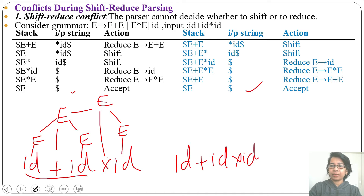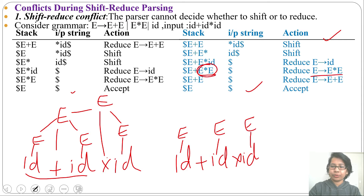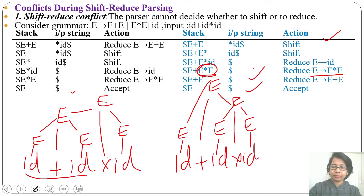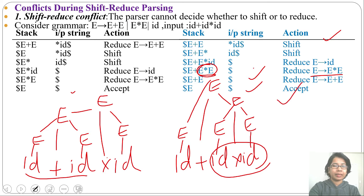Now construct the parse tree according to the second parser. First id is reduced to E, then this id is reduced to E, then this id is reduced to E, then E multiplication E is reduced to E, then E plus E is reduced to E. So according to this parser, first we evaluate the multiplication, then we evaluate the addition. According to operator precedence, first we should evaluate the multiplication, then the addition — so this parser is correct and the first parser is wrong. This is all about shift-reduce conflict.